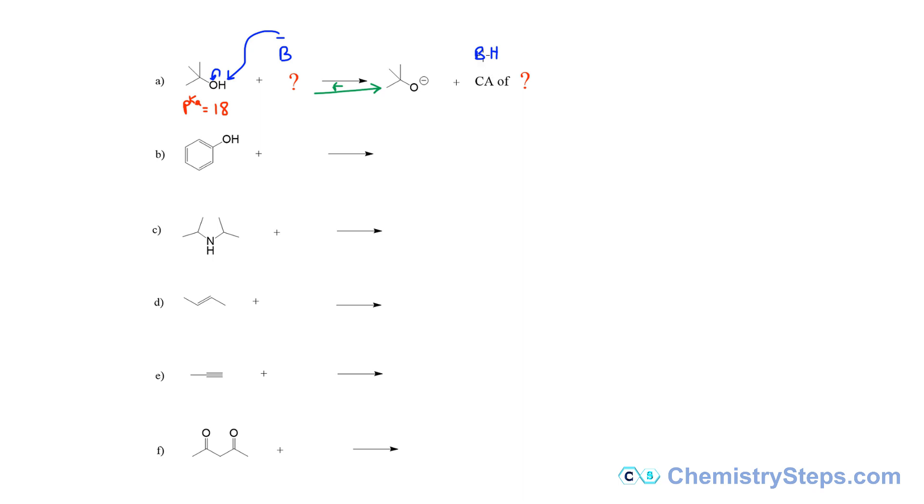In other words, we want something here as an acid, which is the conjugate acid of the base that we have used, to have a pKa that is larger than 18.